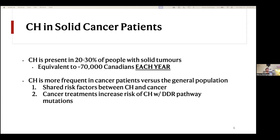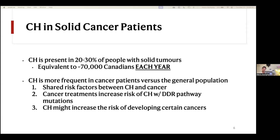Another reason is the actual receipt of cancer treatment. Certain cancer treatments, namely cytotoxic chemotherapy and radiation, can increase the risk of having CHIP, particularly with driver mutations in the DNA damage response pathway. And most interestingly, CHIP might actually be increasing the risk of developing certain cancers — an area mostly established so far in lung cancers and liver cancers.